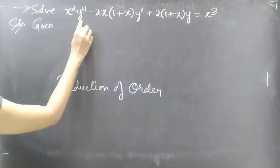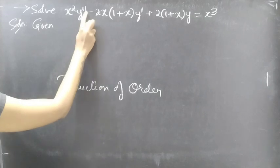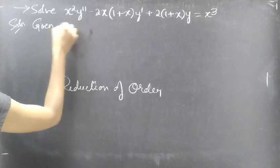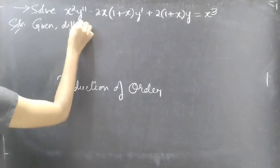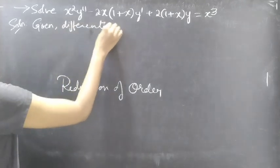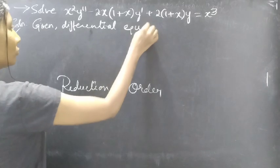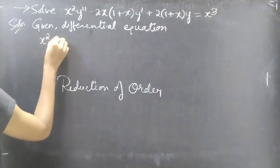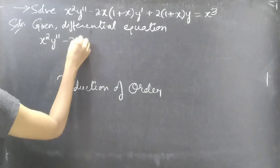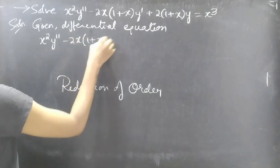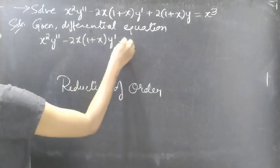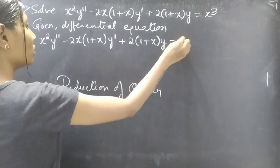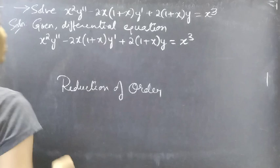We are given a differential equation of second order. The given differential equation is: x squared y double dash minus 2x times (1 plus x) times y dash plus 2 times (1 plus x) times y equal to x cubed.